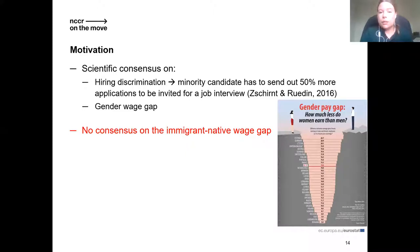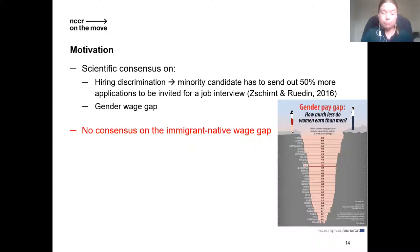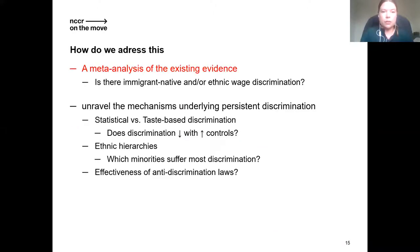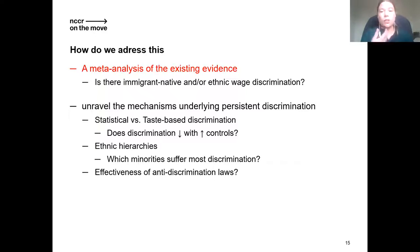There is also scientific consensus on the gender wage gap — many studies show that women are paid less for the same job with the same skills as men. However, there is no such consensus on the immigrant-native wage gap, and that is what we aim to address with this meta-analysis. We mainly try to answer the question of whether there is an immigrant-native wage gap or ethnic wage gap, and our method also allows us to answer questions about the mechanisms behind wage discrimination.